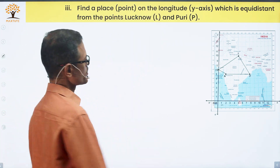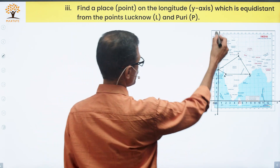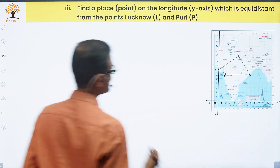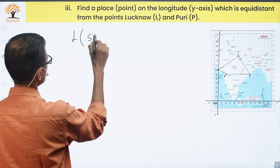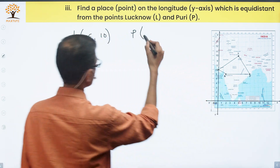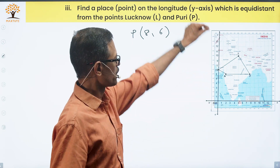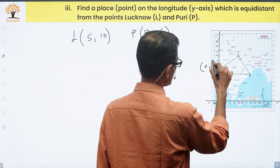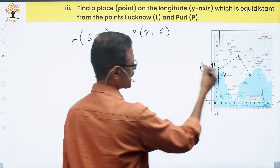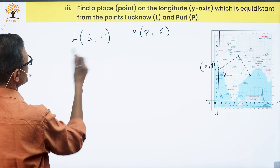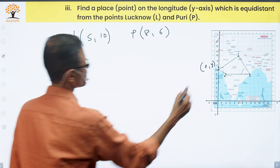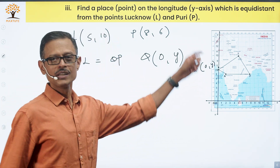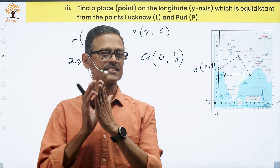Part 3 internal choice: find a place on the longitudinal y-axis which is equidistant from Lucknow and Puri. Lucknow is (5,10) and Puri is (8,6). A point on the y-axis has x-coordinate 0, so let the point be Q = (0, y). We need QL = QP, so QL² = QP².